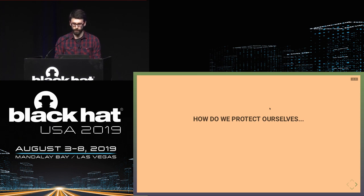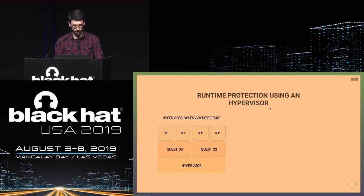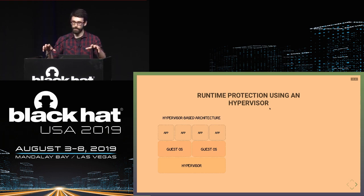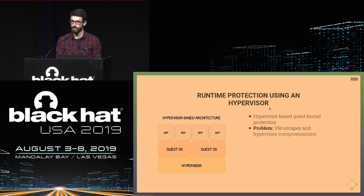How do we protect ourselves if the kernel is compromised? During the boot process we can implement mechanisms such as secure boot. But for runtime protection it's more complicated. One option is to use a hypervisor — instead of having security inside the OS, it's now in the hypervisor, which monitors virtual machines for compromise. But the issue is that it's still software-implemented: a VM escape or hypervisor compromise leaves your entire system exposed.